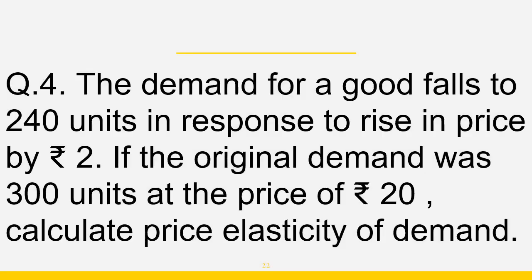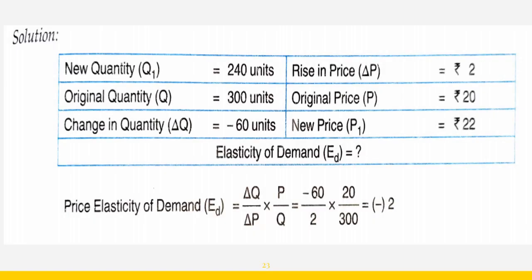Question 4: demand for a good falls to 240 units in response to a rise in price by Rs.2; original demand was 300 units at price Rs.20 — calculate price elasticity of demand. New demand is 240, original is 300, so delta Q is minus 60. Rise in price is 2, original price is 20, new price is 22. ED equals delta Q by delta P into P by Q: minus 60 by 2 into 20 by 300 equals minus 2.